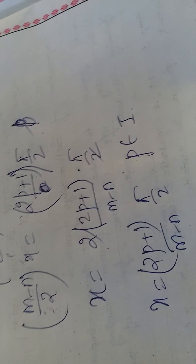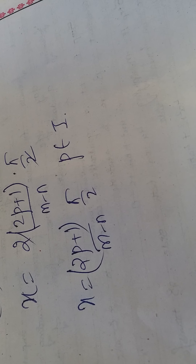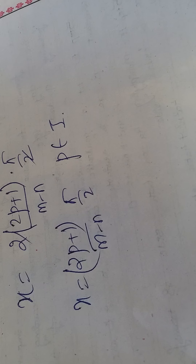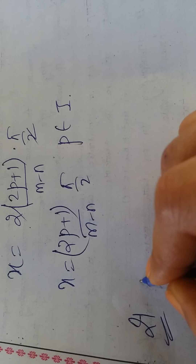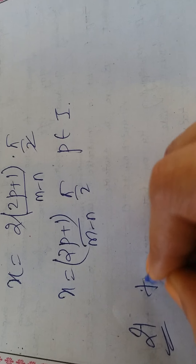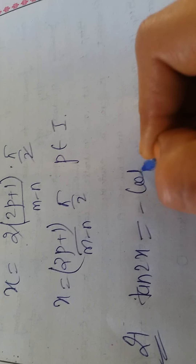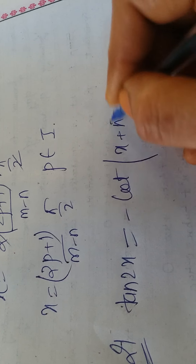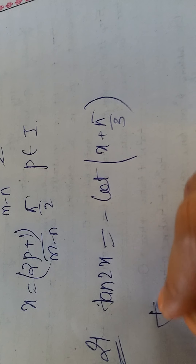Now question 21: tan(2x) = -cot(x + π/3). I'll also cover questions 22 and 24 after this.